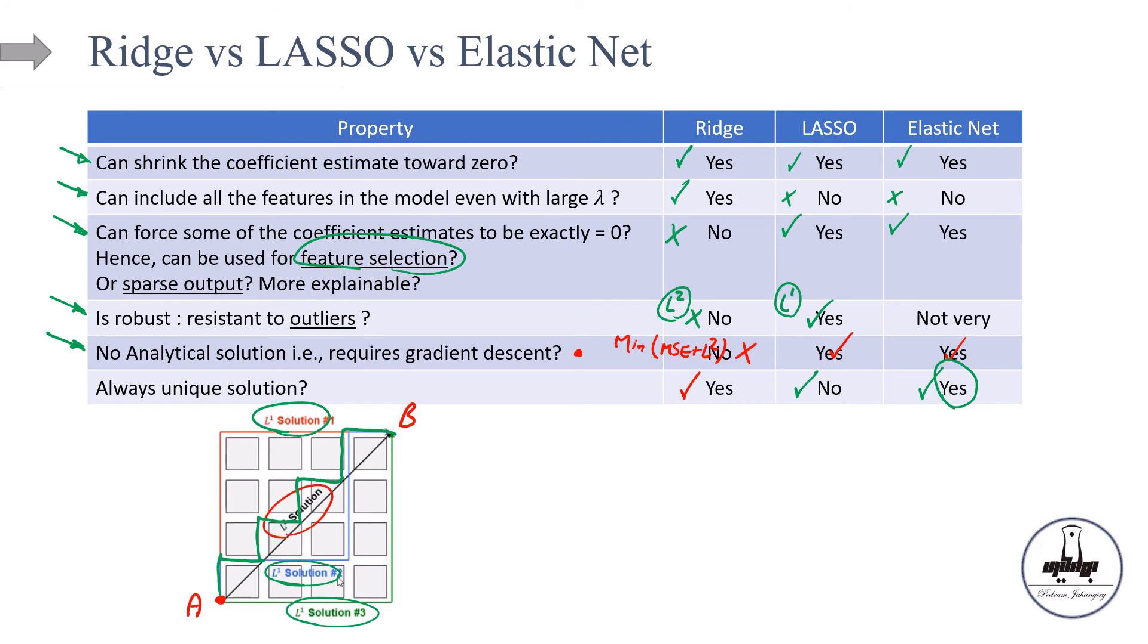I hope that with this comparison, now you have a better understanding of why you should use ridge regression, for example, over lasso and elastic net, and why do you want to use elastic net over ridge or lasso.